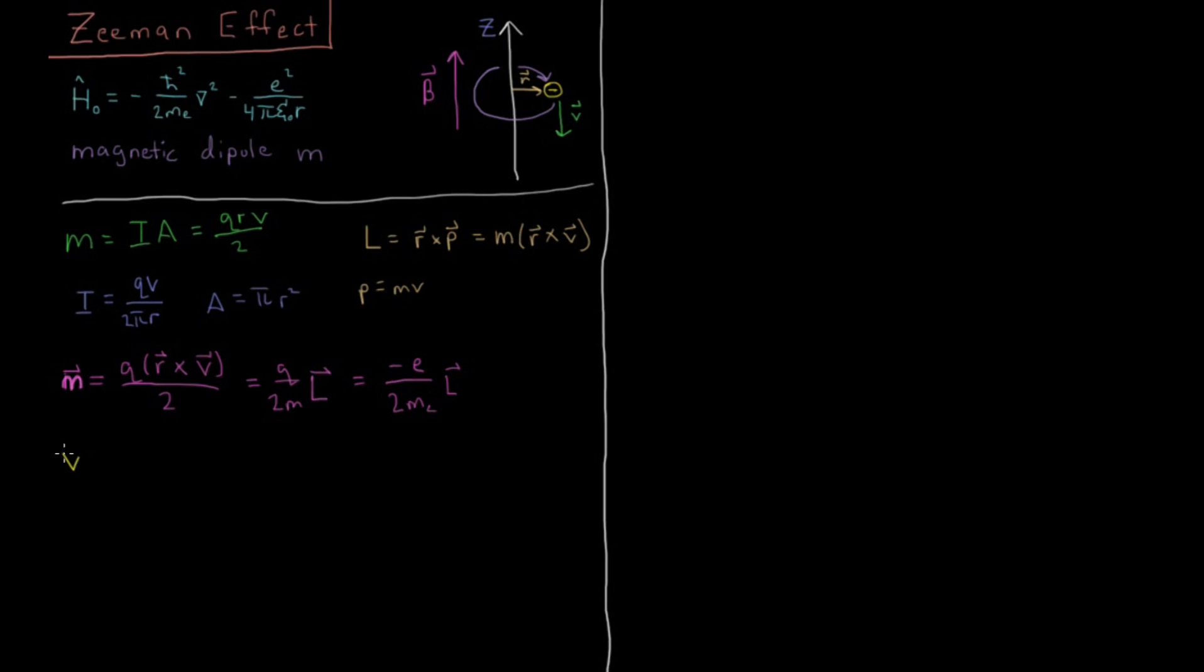Then the potential energy V, or we could call this VB perhaps for a magnetic field B, is going to be minus that magnetic dipole vector m and the dot product of that with some magnetic field B. Now in the case where we have a magnetic field which is just going in the positive z direction, then this dot product is going to reduce to minus the component of this magnetic dipole in the z direction times the component of the magnetic field in the z direction, or just all of it if the magnetic field is entirely in the z direction.